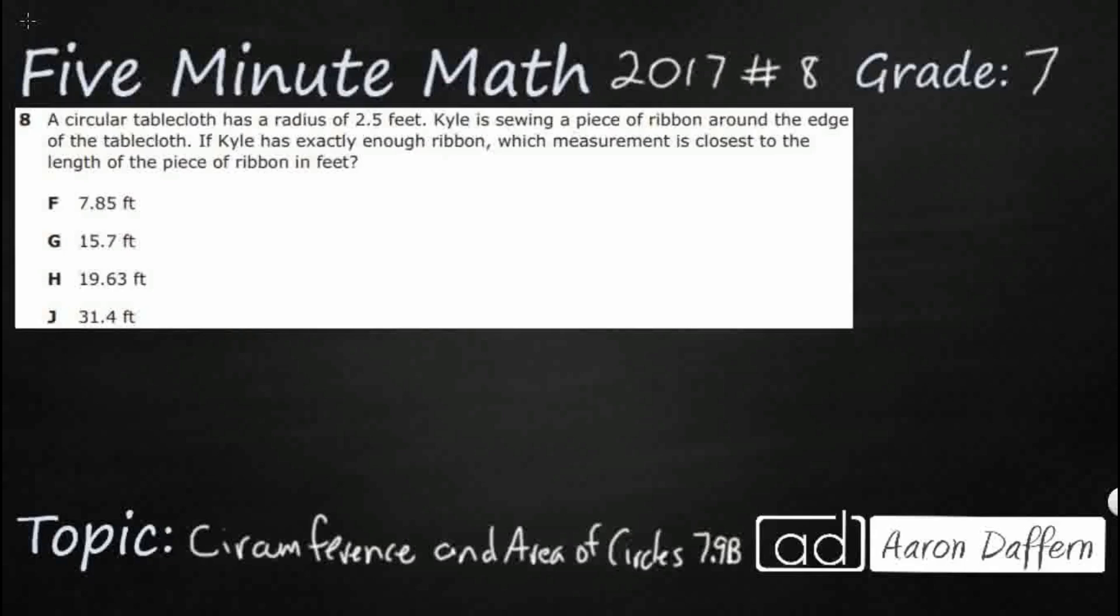Hello and welcome to 5-Minute Math. Today we are looking at the 7th grade concept of circumference and area of circles. This is standard 7.9b in the great state of Texas and we are using item number 8 of the 2017 released star test.